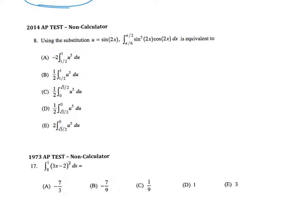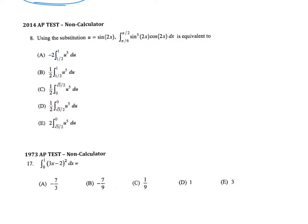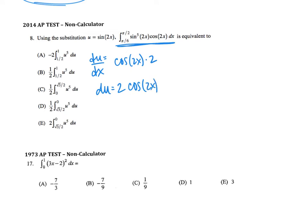On problem 8, they gave me the u that I should use, and they don't even want me to solve the entire integral — they just want me to set it up. I'm going to rewrite all of this in terms of u. The derivative of u with respect to x would be cosine of 2x times 2 because of the chain rule. When I separate my variables, I'd have 2 cosine of 2x dx, but I only need a cosine of 2x dx, so I'm going to divide that 2 out, giving me 1/2 du equals cosine of 2x dx.